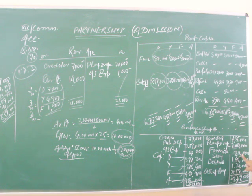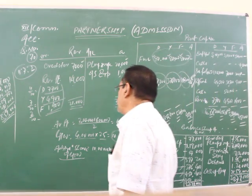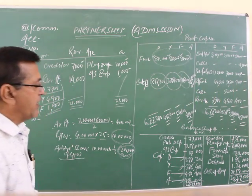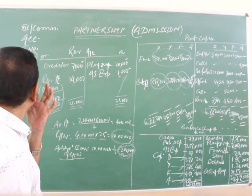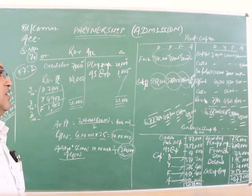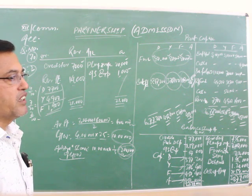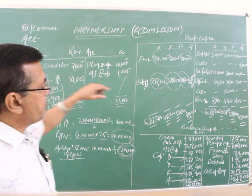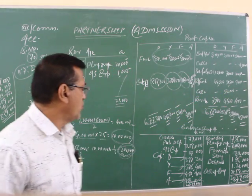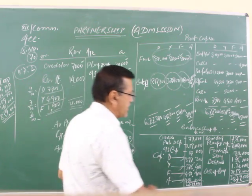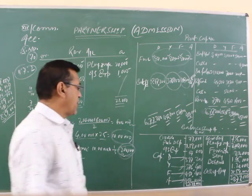Furniture total is two lakhs 60,000, but furniture two lakhs 40,000 taken over by the existing partners. So furniture left only 20,000. Stock one lakh 45,000, debtors one lakh 20,000.